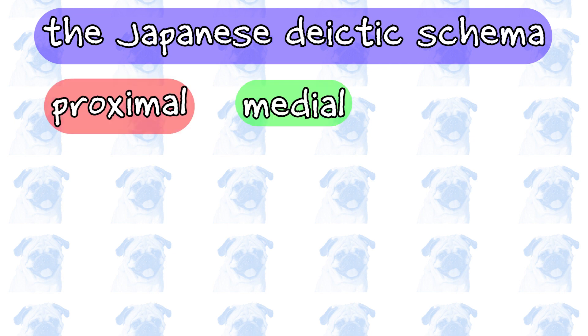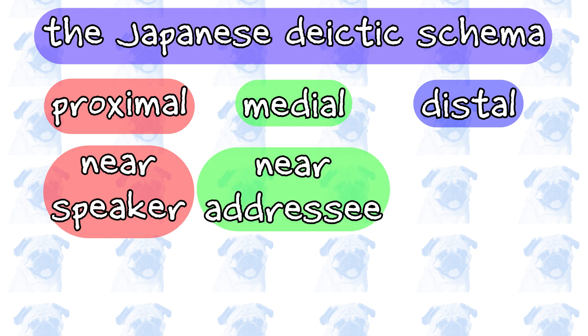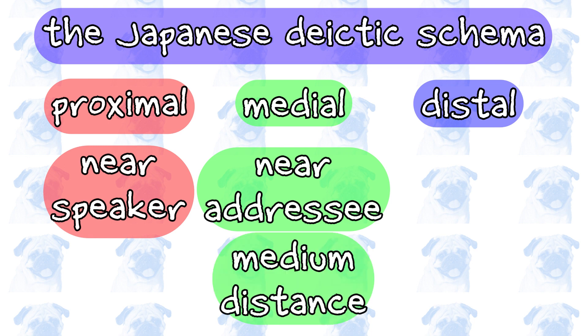In Japanese, the relative distance between the speaker and another entity, location, or time can be conceptualized using a three-way distinction: proximal, medial, and distal. The proximal denotes the space near the speaker. The medial usually denotes the space near the addressee, or the person to whom the speaker is talking, but it can also refer to an entity, place, or time that is considered neither too close to nor too far from the speaker.